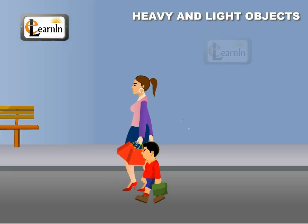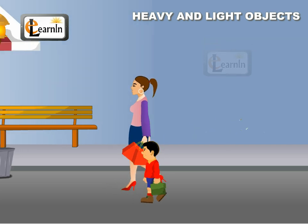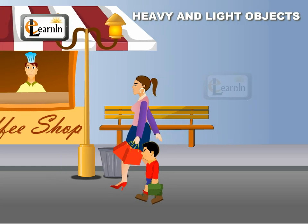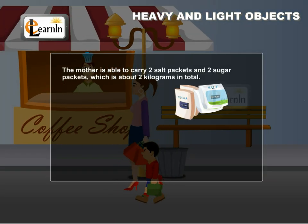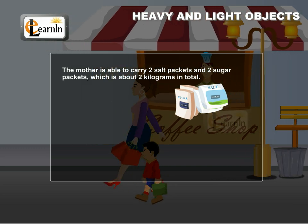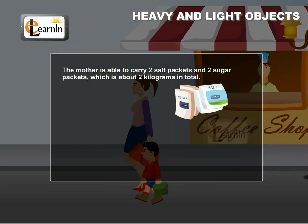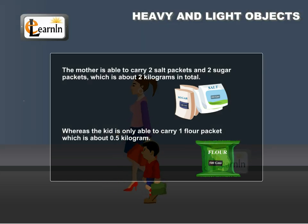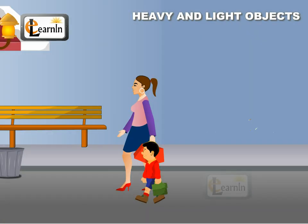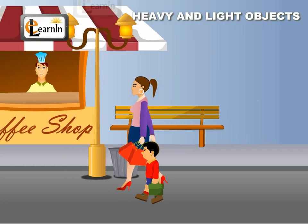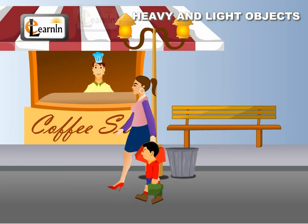A boy and his mother are returning from the supermarket carrying some household commodities. The mother is able to carry two salt packets and two sugar packets, which is about two kilograms in total, whereas the child is only able to carry one flour packet which is about half a kilogram. This defines how some people can carry heavy objects while others can carry only the lighter ones.